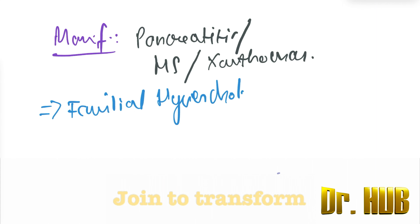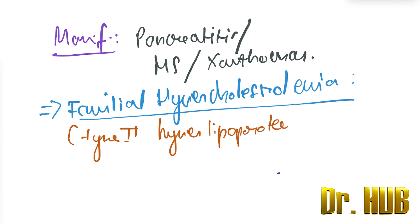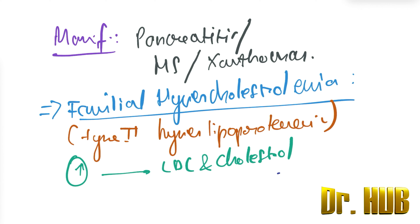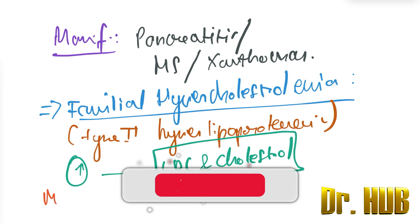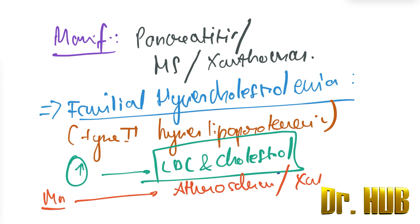Moving on to the second variety: familial hypercholesterolemia, which is Type 2 hyperlipoproteinemia. In this condition, the levels that are increased are LDL and cholesterol.